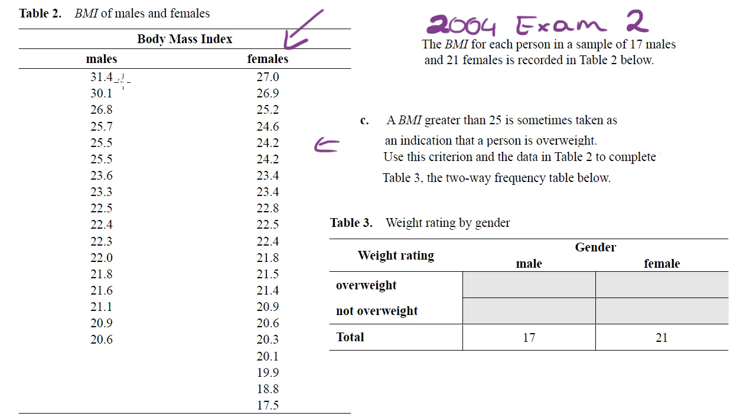So, funnily enough, we started out with some numerical data here, these BMIs. We're actually turning it into categorical by saying putting it into these categories overweight and not overweight. But anyway, so in this question, what they wanted us to do was find a BMI greater than 25 and put count all of those up and put them in this column, the overweight column. And anything below 25 would be in the not overweight column. So both males and females.